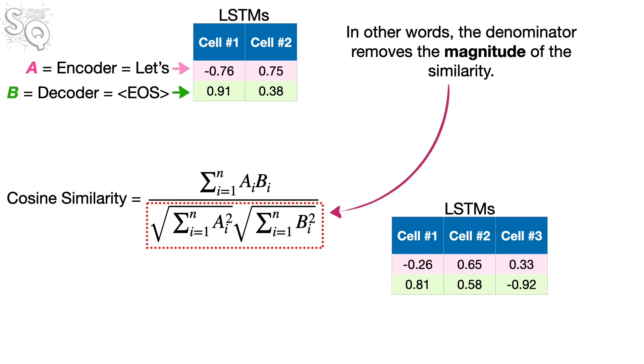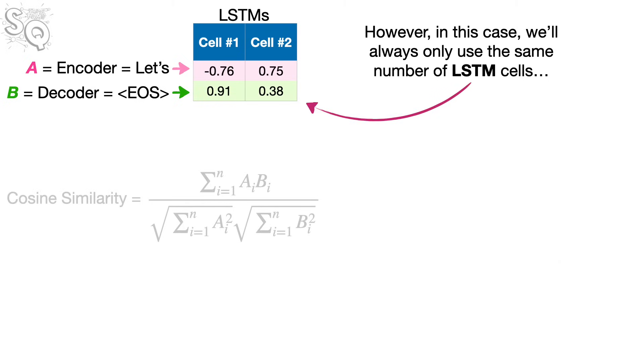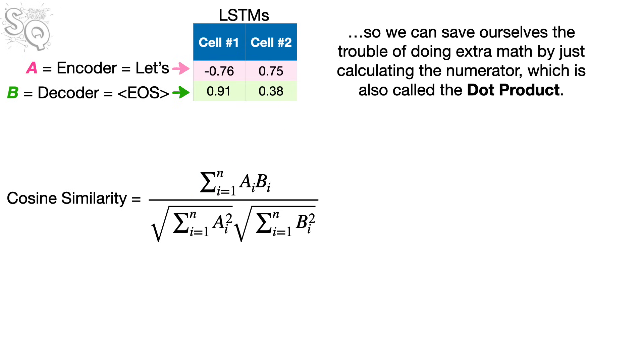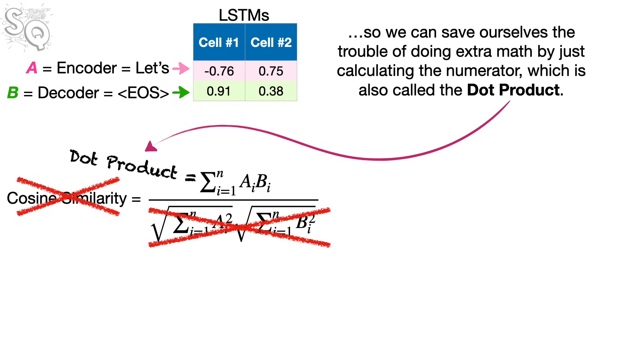However, in this case, we'll always use the same number of LSTM cells. And, in practice, using just the numerator works well. So we can save ourselves the trouble of doing extra math by just calculating the numerator, which is also called the dot product.